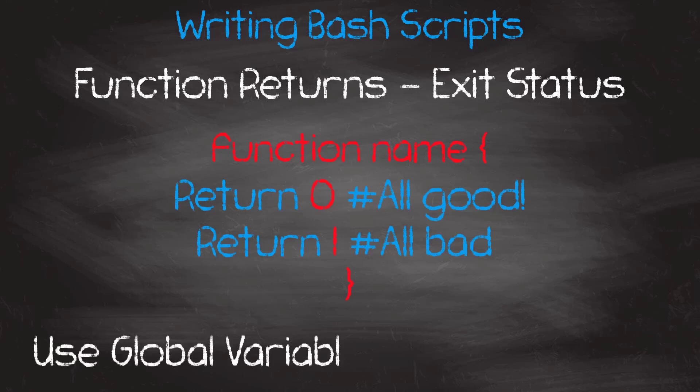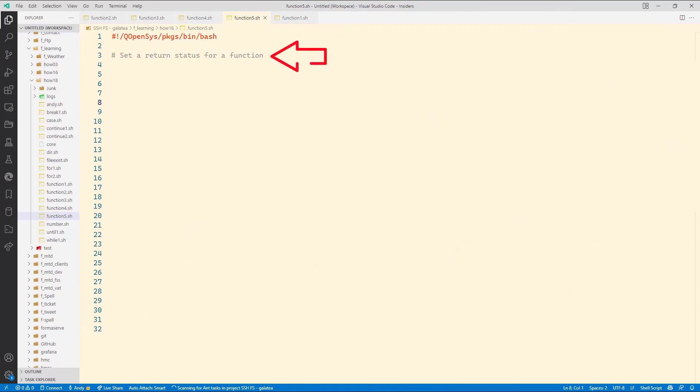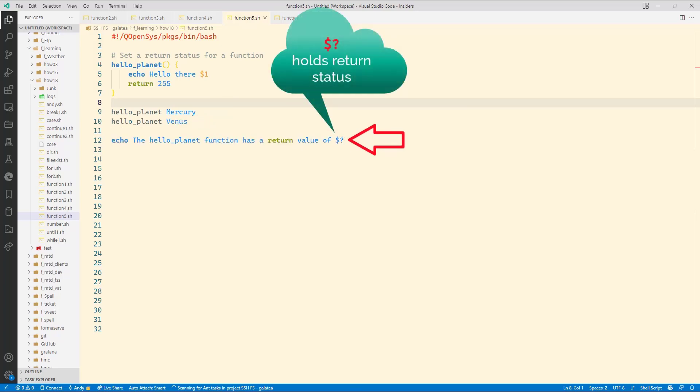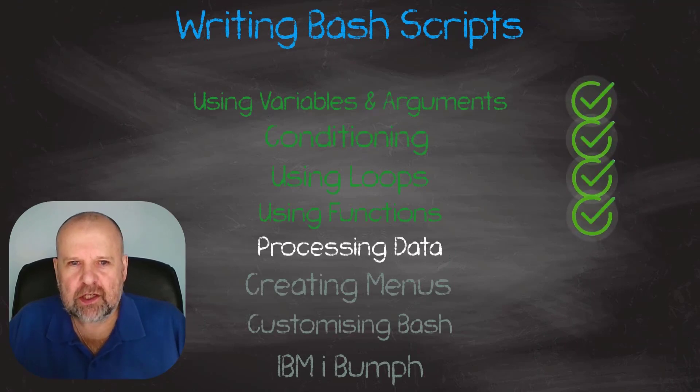The number returned can be thought of as the function's exit status. If you need to return a value from a function, the simplest way is to use a global variable. Let me show you an example. Let's go straight into a function. Hello planet. Then we will echo hello there dollar sign 1. The first variable passed to the function. Then return 255, which is an error code as it is greater than 0. Then we will call the function. Firstly with Mercury. And then we will call it again with Venus. Then we will echo out the function return code using dollar question mark. Let me run this one. Function 5 dot sh. Hello there Mercury. Hello there Venus. And the function returns a value of 255.